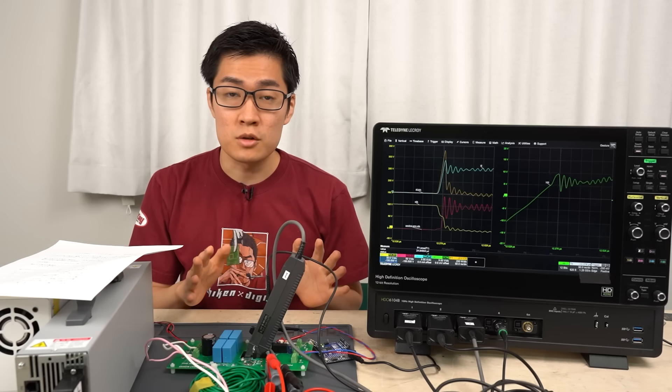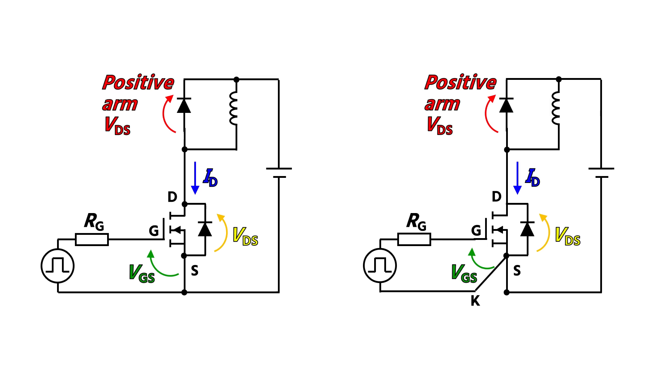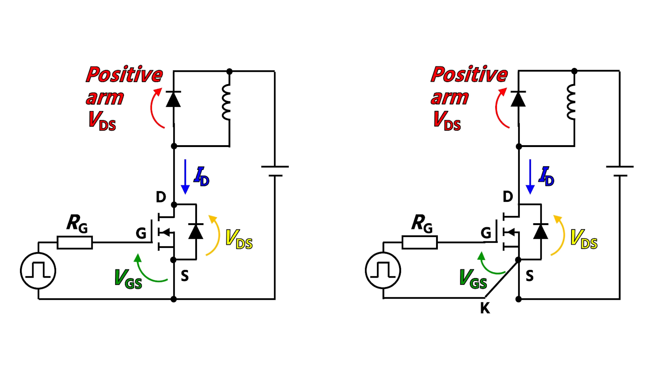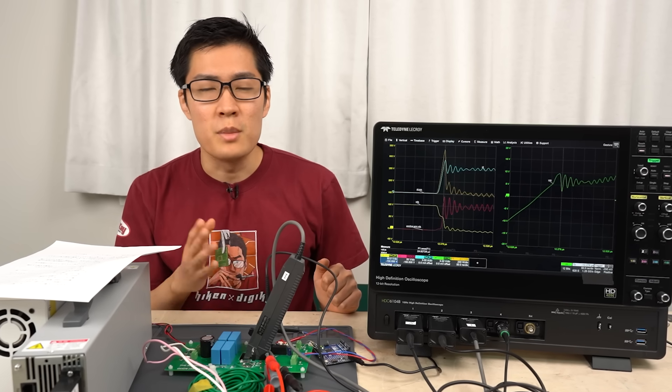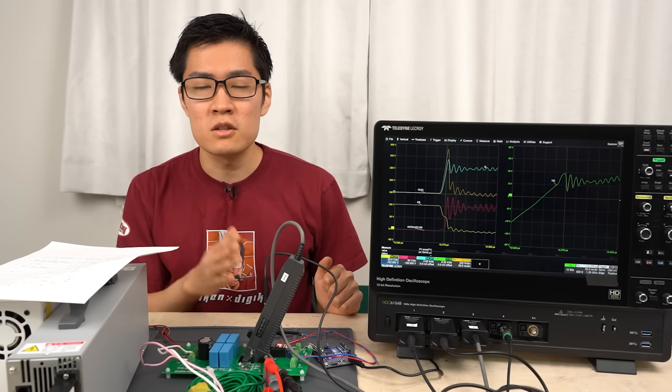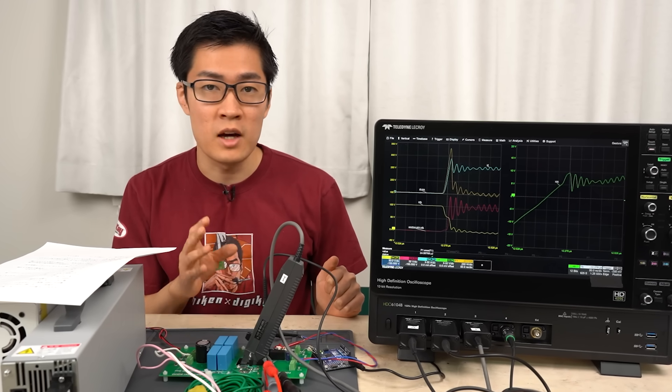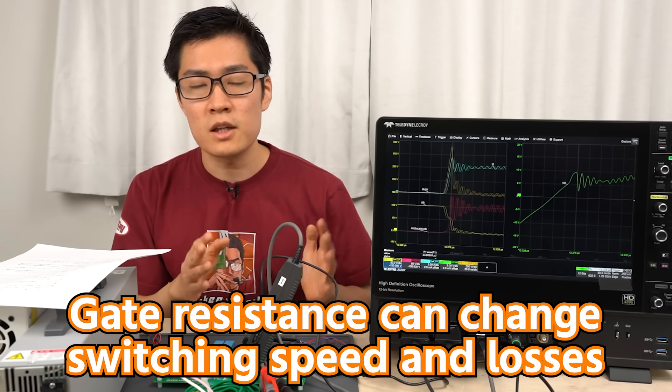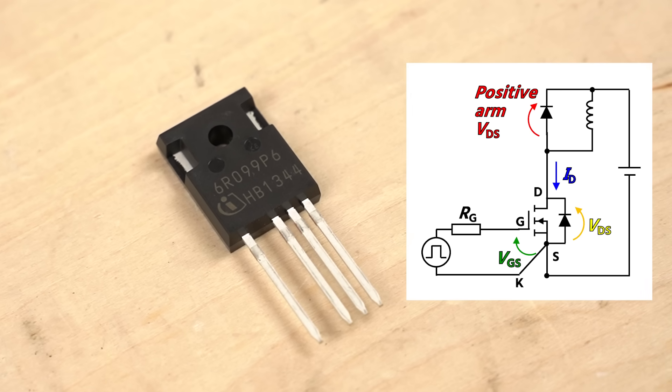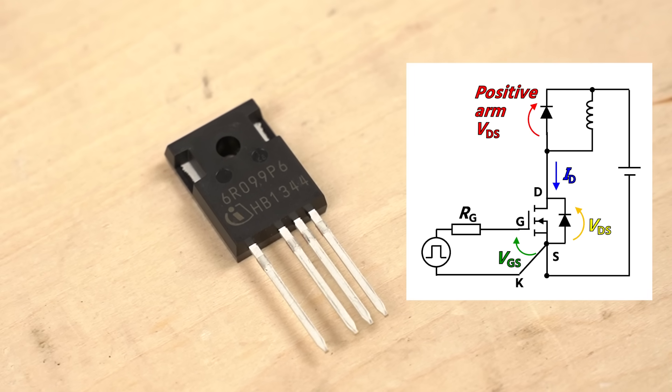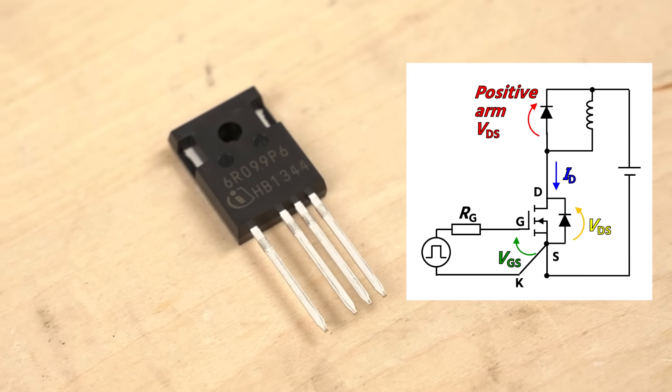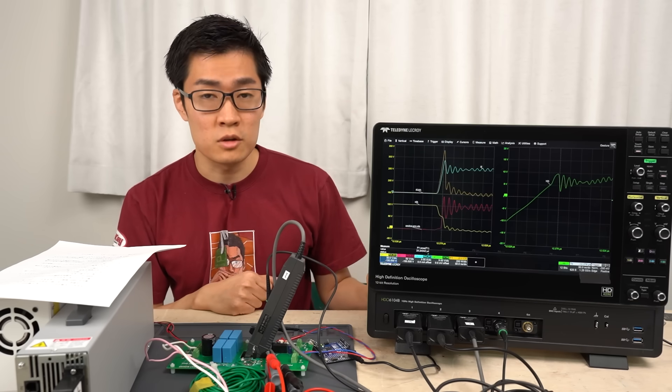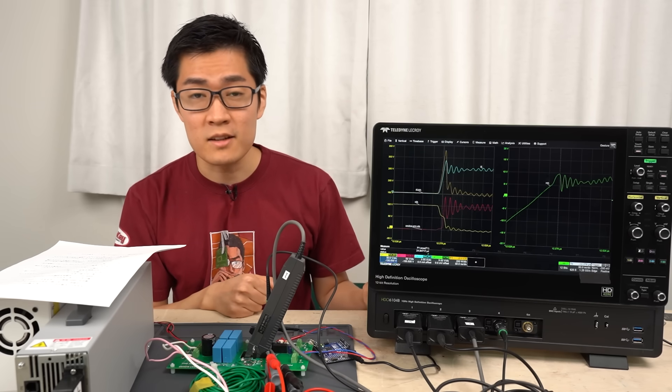So far, we've used both the 3 terminal and 4 terminal packages, and it looks like the 4 terminal package performs better. The advantage of using this package is that it can increase the switching speed. Because of that, the switching losses decrease. The switching speed and switching losses are influenced by the gate resistance. However, using this 4 terminal package, we can minimize the influence of the main circuit current on the gate driver circuit as much as possible. Therefore, the gate driver circuit design may become a bit easier compared to 3 terminal packages.